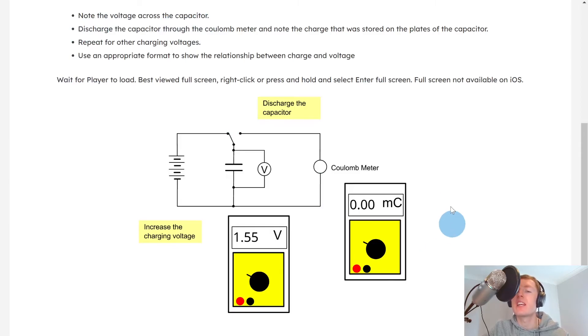So here's a setup of how you might carry out this experiment. So this just has the parts that we've just seen in the circuit diagram, our voltmeter in parallel with the capacitor to get the voltage across it, and the coulomb meter here in order to measure the charge. So it says firstly to note the voltage across the capacitor. So you would note down the voltage on the voltmeter, which is the voltage across the capacitor to begin with.